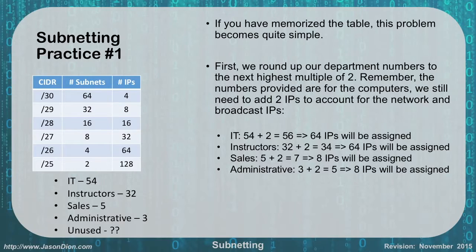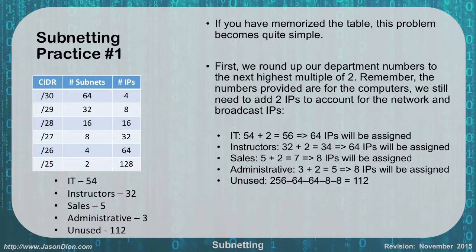Finally we have the unused portion. We need to add up all the previously used IPs: 64 plus 64 plus 8 plus 8. That gives us a total of 144, and 256 minus 144 leaves us 112. The question becomes: do we round 112 up to 128 making it a slash 25, or down to 64 making it a slash 26? Because it's the unused portion we round down — otherwise we'd be telling network administrators we still have 128 IPs when in reality we only have 112.